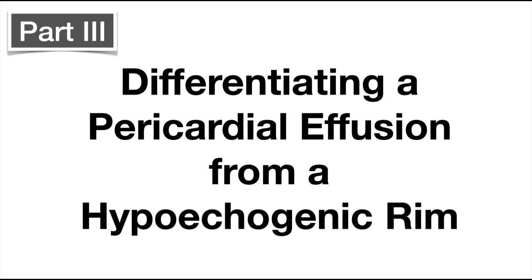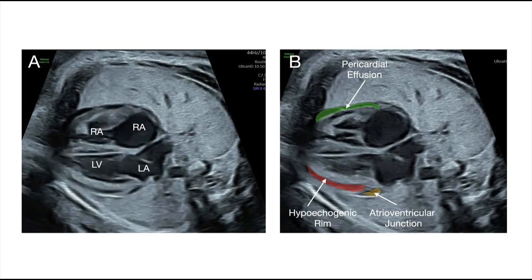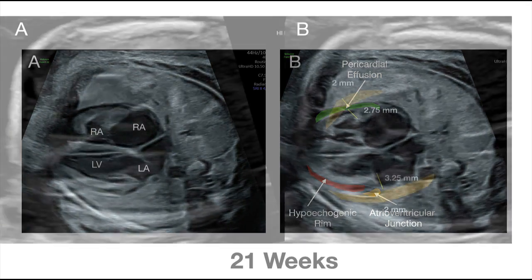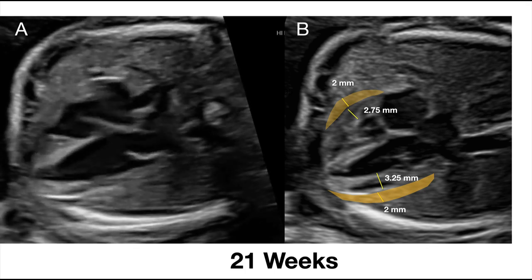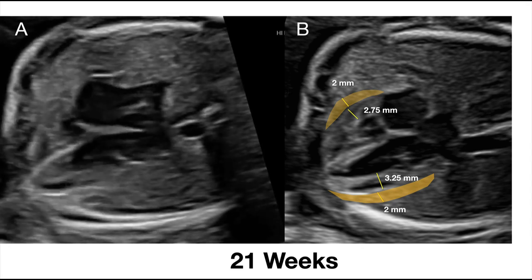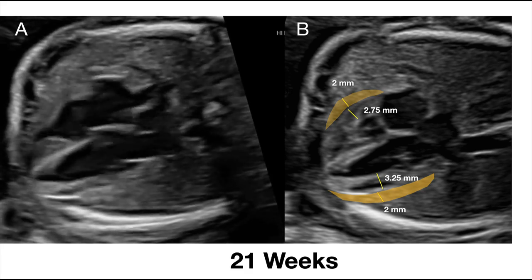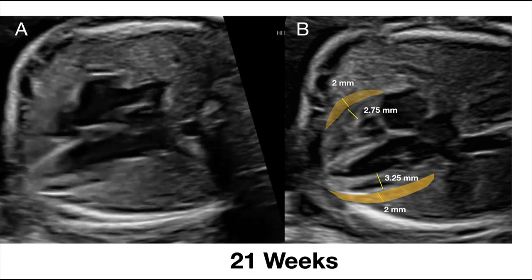Part 3: Differentiating a pericardial effusion from a hypoechogenic rim. Figure A illustrates both a pericardial effusion and hypoechogenic rim. Figure B demonstrates the pericardial effusion as a color overlay in green, the hypoechogenic rim in red, and normal fluid at the atrioventricular junction in yellow. A clip of a normal four-chamber view illustrates the thickness of the ventricular walls. Figure B illustrates the theoretical size of a 2 mm effusion along the right and left ventricular walls; a 2 mm pericardial effusion is quite large compared to the ventricular walls. In the second trimester fetus, a 1 mm pericardial effusion would be significant. Therefore, the 2 mm rule should be discarded as criteria for the significance of a pericardial effusion.